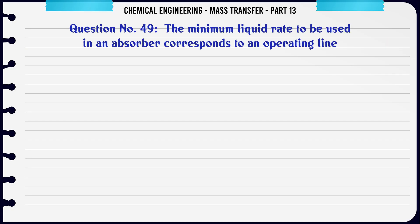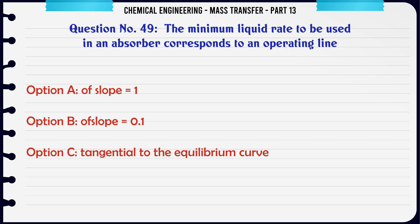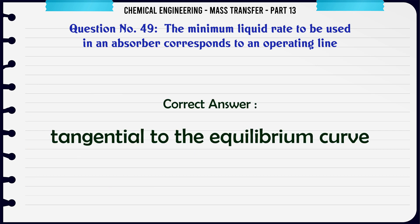The minimum liquid rate to be used in an absorber corresponds to an operating line: A. Of slope 1. B. Of slope 0.1. C. Tangential to the equilibrium curve. D. None of these. The correct answer is: Tangential to the equilibrium curve.